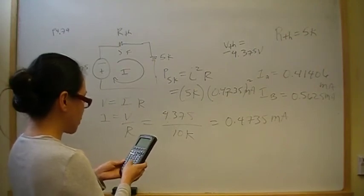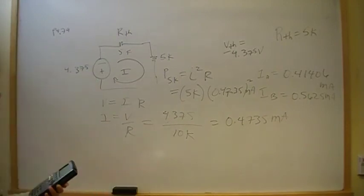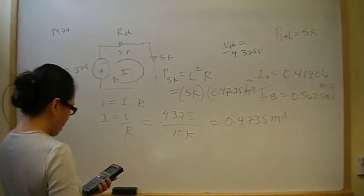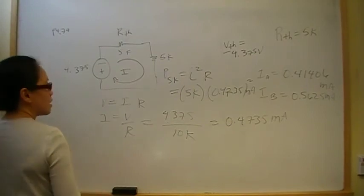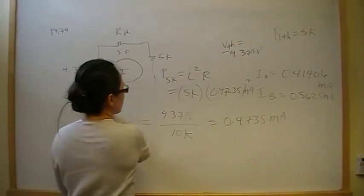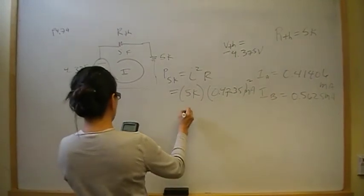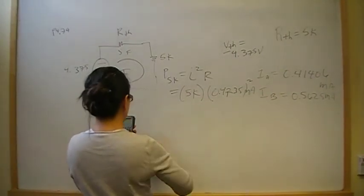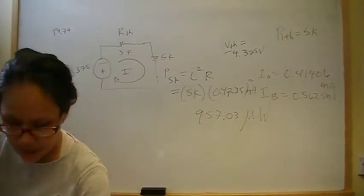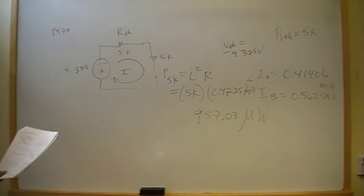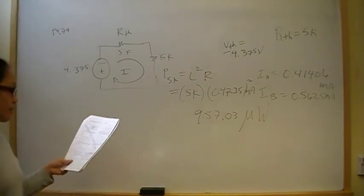Using the correct calculation (0.4375×10⁻³)² × 5×10³, the maximum power that can possibly be delivered is 957.03 microwatts. So the answer to part A is R-naught = 5 kilohms, and the answer to part B is 957.03 microwatts.